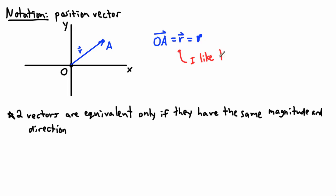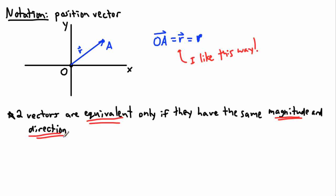Now, two vectors are equivalent — we use the word equivalency — we say they're equivalent only if they have the same magnitude and same direction.